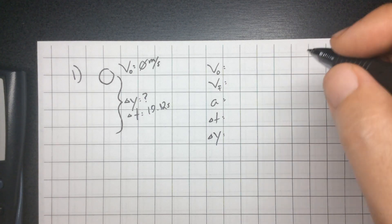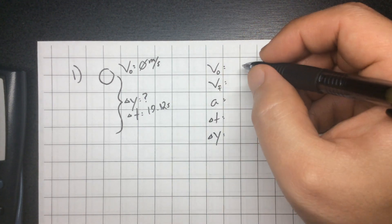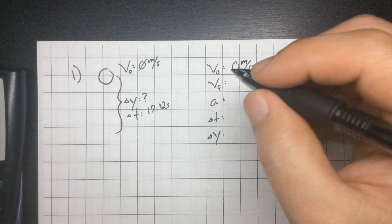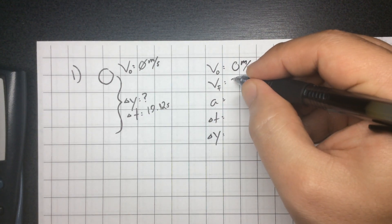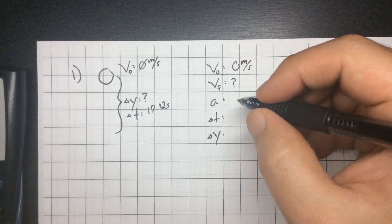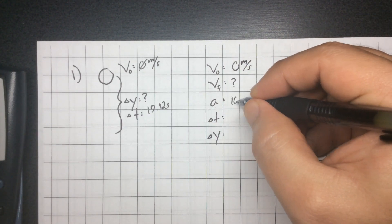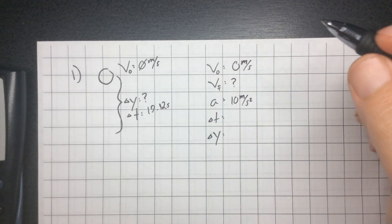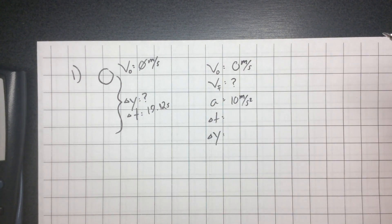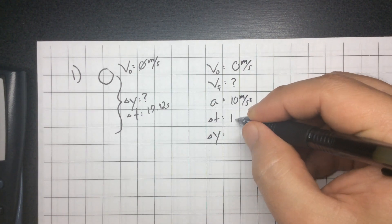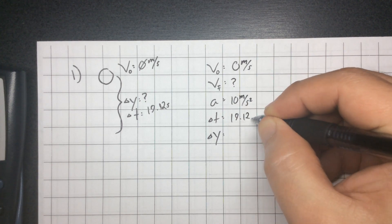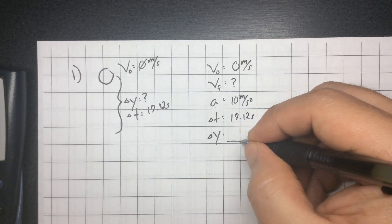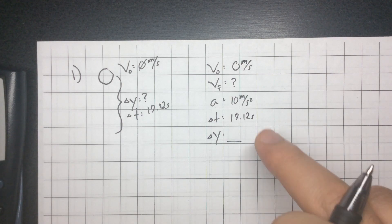So this thing falls straight down along a straight line, so I'd make this list once for the one object. If it were in a parabola, that's two dimensions for one object, so I'd make two lists. Zero meters per second is my starting velocity. Final velocity — I don't know. Acceleration — we're going to call that 10 meters per second squared, the acceleration due to gravity. Time is 19.12 seconds. And the change in position is what I'm looking for.